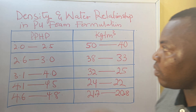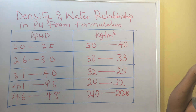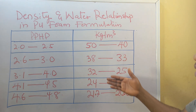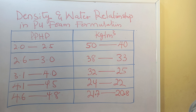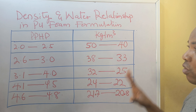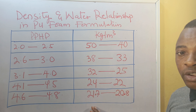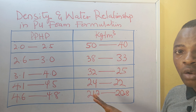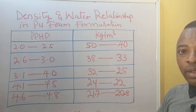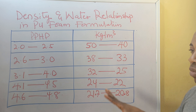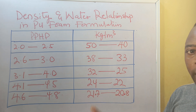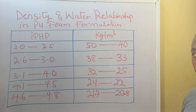Now, looking at this table — this table, just as I said, is the data generated specifically from formulations that do not require methylene chloride. That is what we call a water-blown formulation.